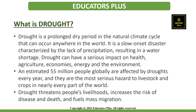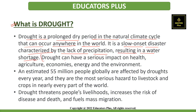So now let's move towards the topic of drought. Drought is a prolonged dry period in any natural climate cycle and it can occur in any place in the world. It is a slow onset disaster which is characterized by the lack of precipitation and it results in water shortage.